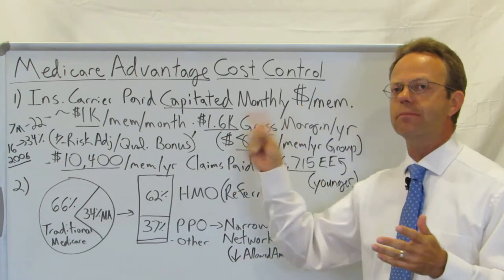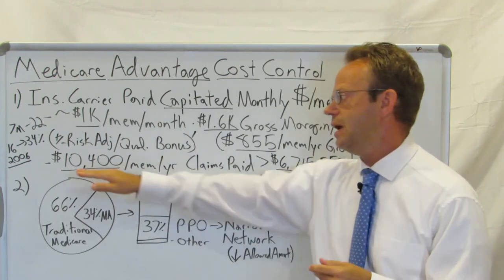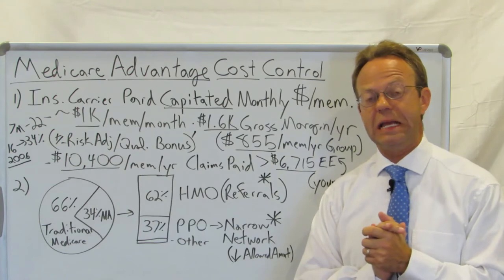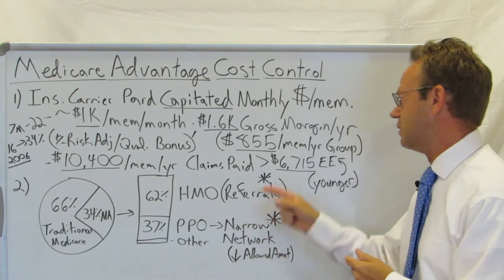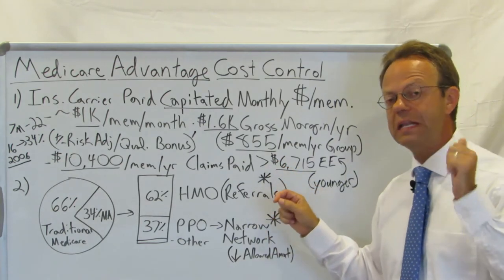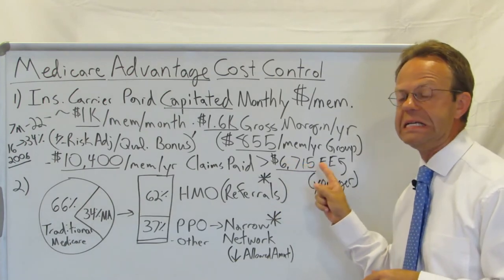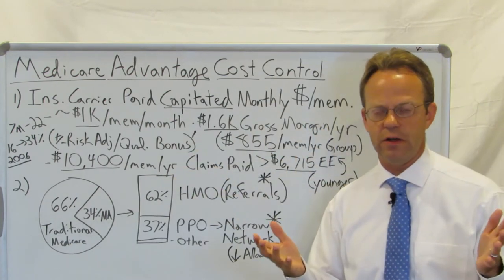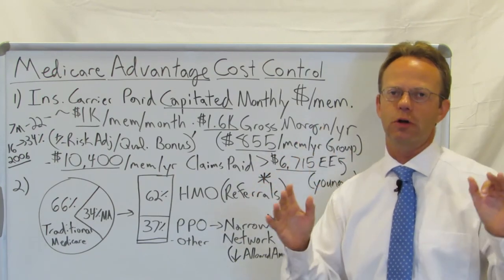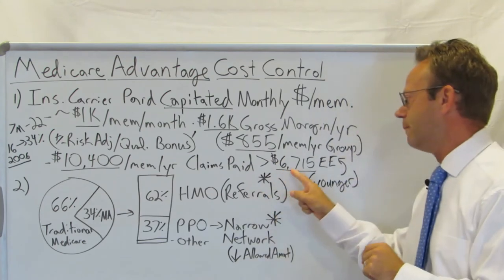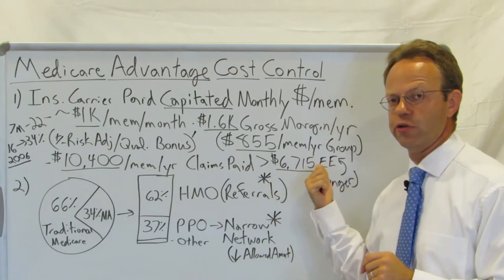If you take the margin out of the about $12,000 per year that they're getting paid by the government, that means they're paying out about $10,400 in claims per member per year. Compare that to an employer-sponsored plan, where individual coverage per employee per year is about $6,715. All these statistics are from the Kaiser Family Foundation — they have wonderful information and I will leave links in the show notes. Obviously, Medicare Advantage is paying out a lot more claims per person than commercial insurance.